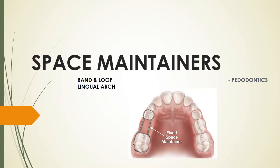In the previous video, I covered the introduction to space maintainers including classification, indications, contraindications, and related factors. Space maintainers are used when there is premature loss of a primary tooth and the permanent tooth has yet to erupt, to prevent closure of that space. Fixed space maintainers include five types: band and loop, lingual arch, distal shoe, Nance palatal, and transpalatal. This video covers the band and loop and the lingual arch.